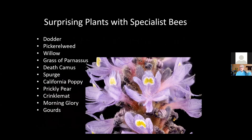One of the things you'll find, particularly if you delve into that list Jared put out there, is that there's no particular pattern in some cases as to what's going to be supporting a specialist bee. Some are pretty surprising — Dotter is an example.